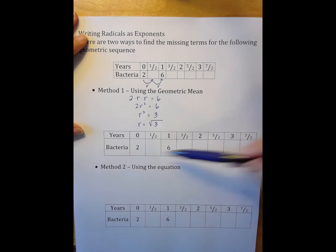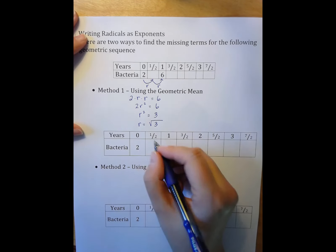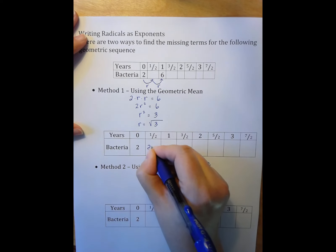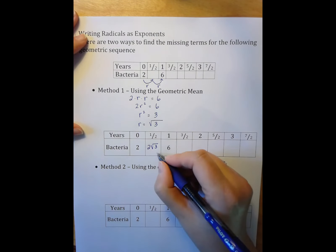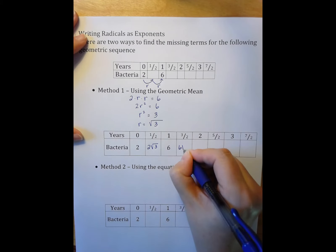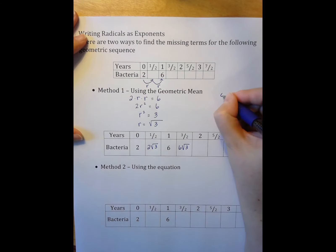So now I can fill in my table here. I'm going to multiply by square root of 3 each time. So that's 2√3 times √3 gives me 6. 6 times √3 is 6√3. 6√3 times √3 is 6√9, which is 6 times 3, which is 18.